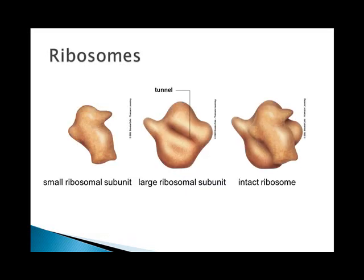Ribosomes are made up of two subunits. They must be produced in smaller parts so they can leave the nucleolus and enter the cytoplasm through the nuclear pores. The two subunits bond together during protein synthesis, and when not in protein synthesis they live apart as two separate components. The mRNA travels to the ribosomes, where translation occurs — the mRNA code is matched to its complementary tRNA, which is carrying the amino acids. So translation is the process of protein production.